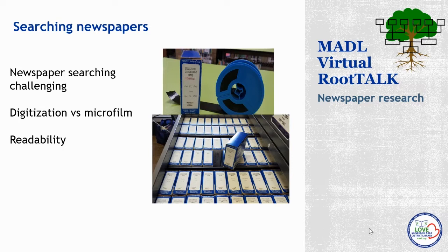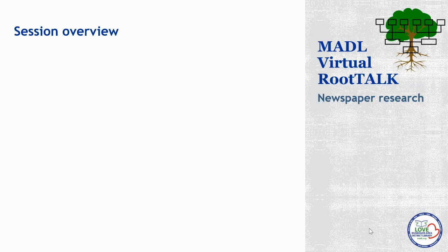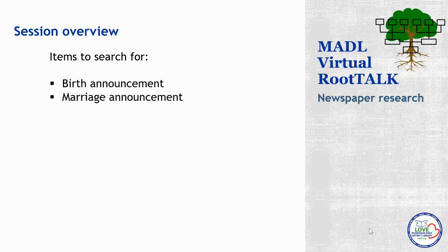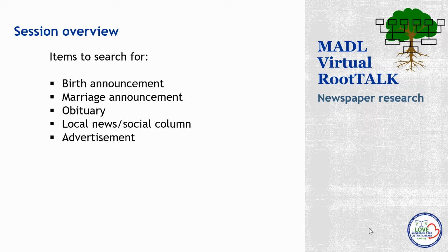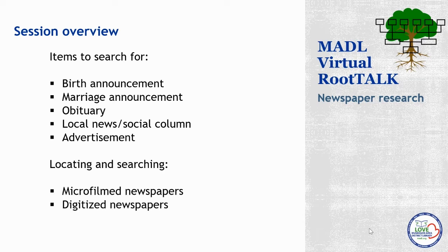This Root Talk session is going to focus on exactly what you can find in newspapers to fill in gaps, push through brick walls, and enrich your personal knowledge of your ancestors, as well as providing some resources and tips. Our outline for today: first, items to look for in the newspapers — birth announcements, marriage announcements, obituaries, local news and social columns, and advertisements. Then we'll discuss locating and searching newspapers in both microfilm and digitized formats. Let's get started with birth announcements.